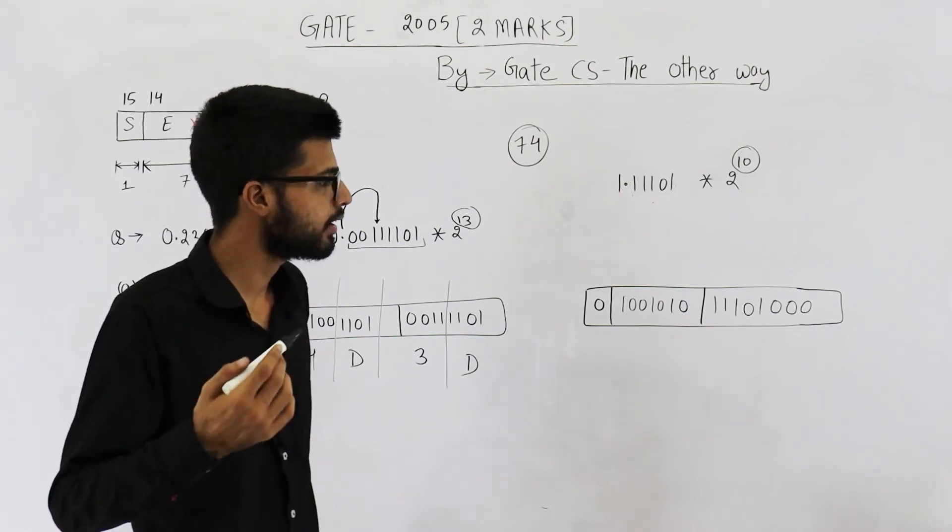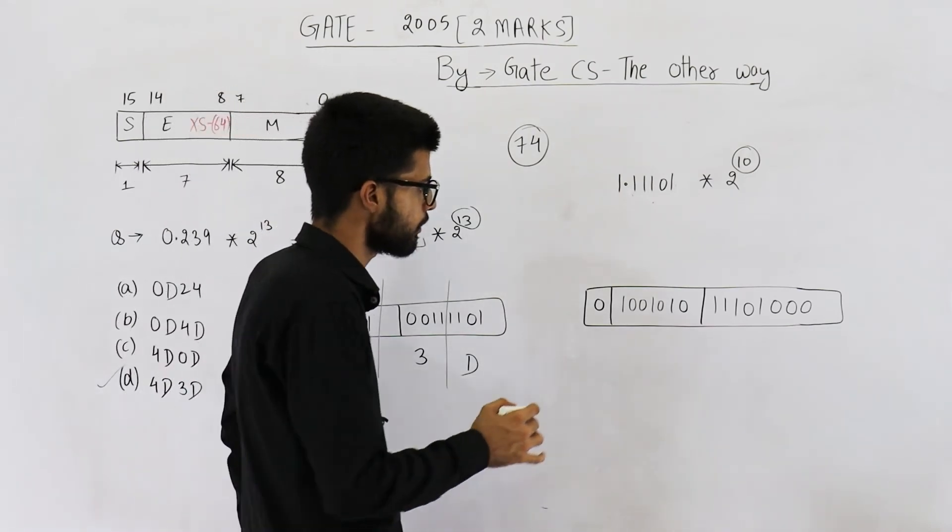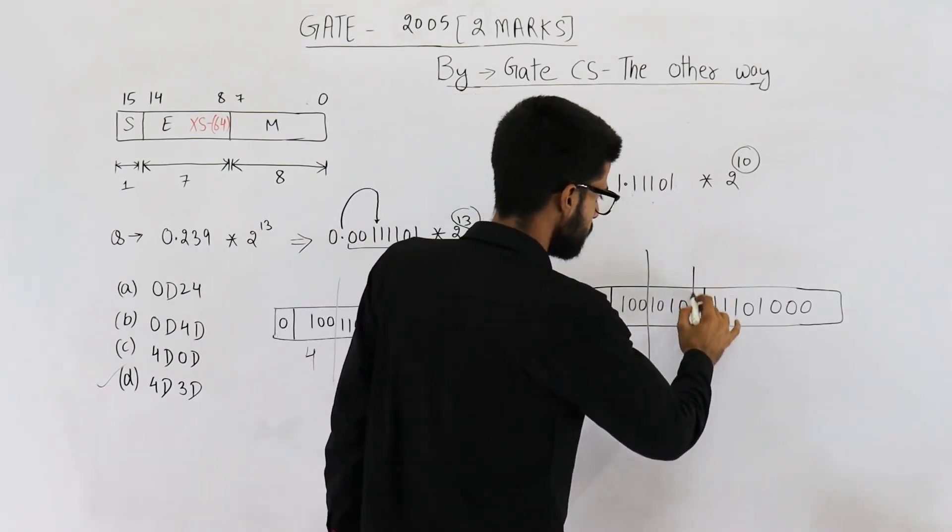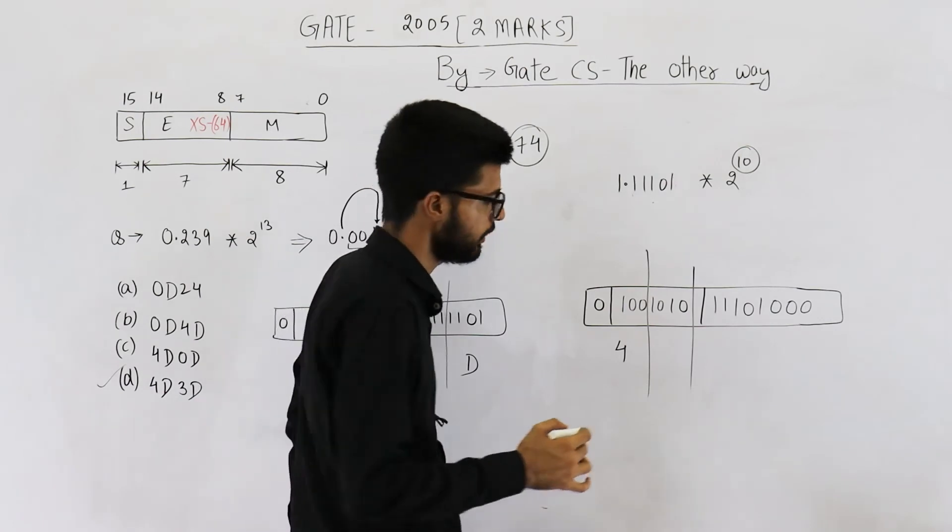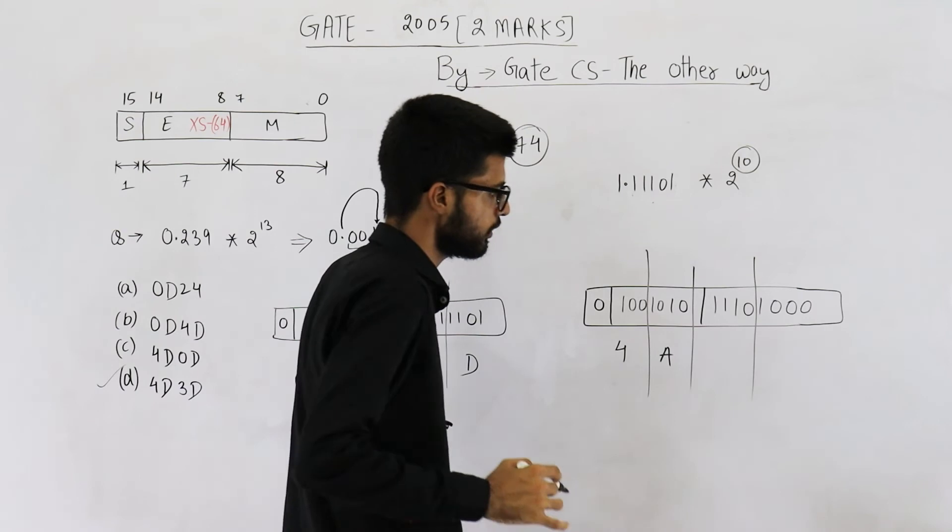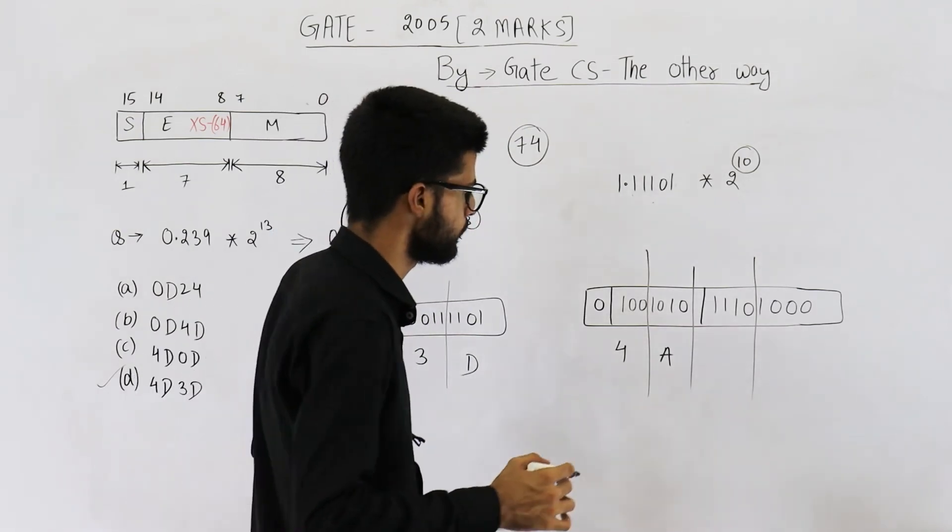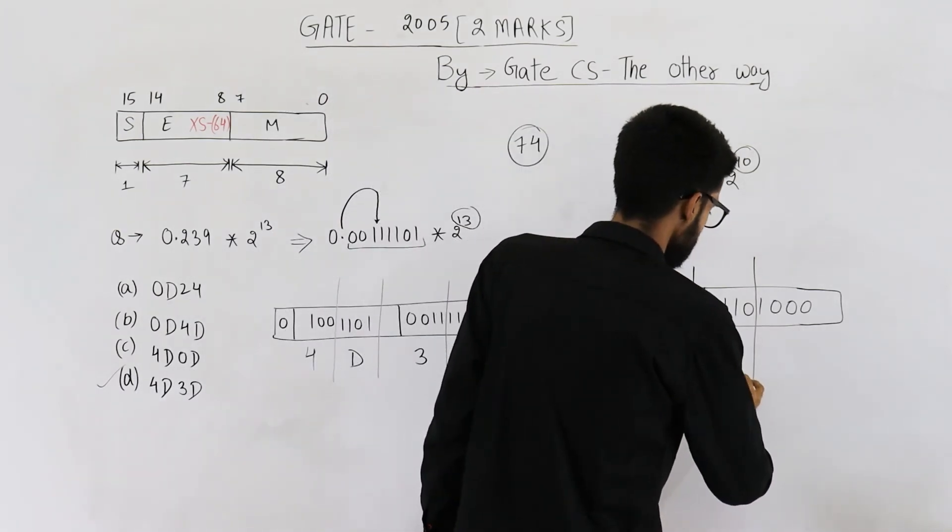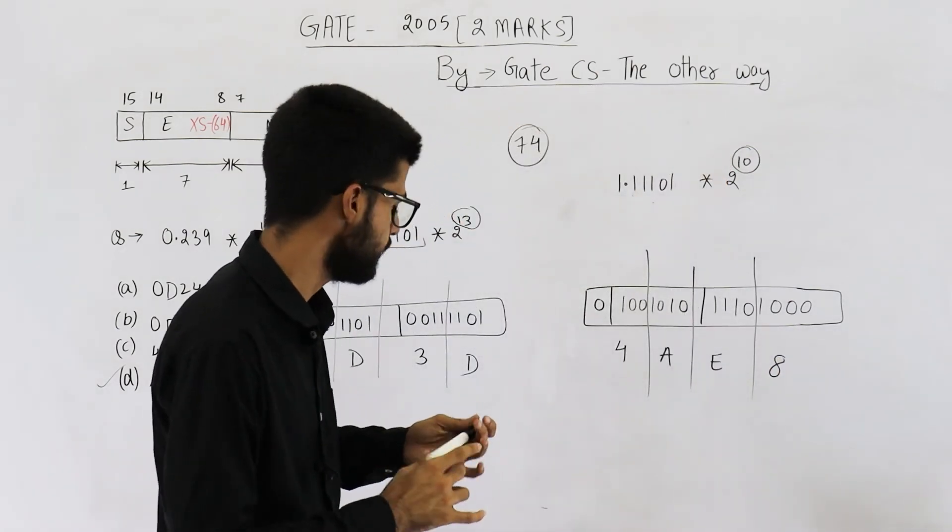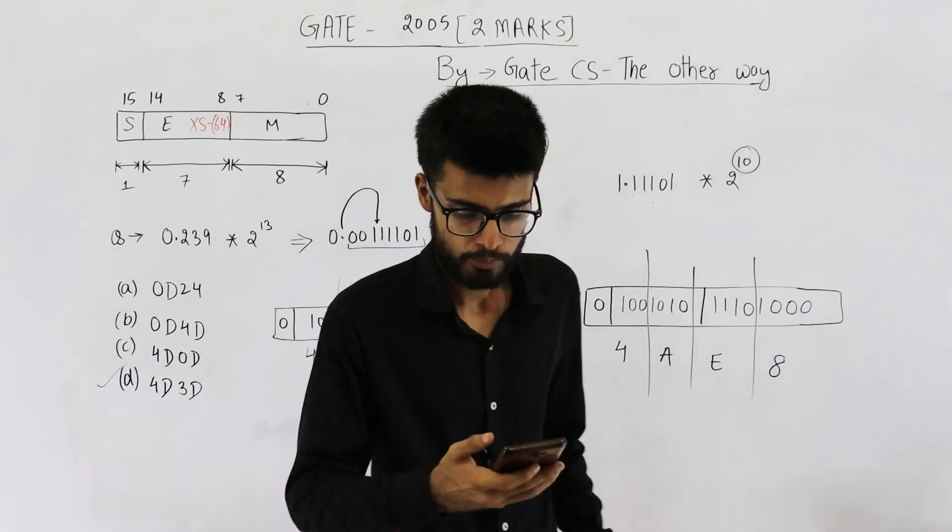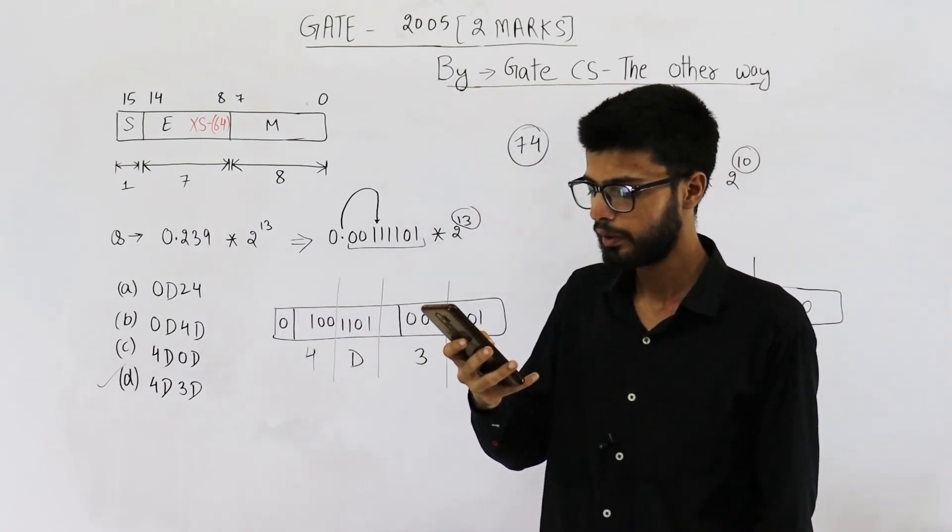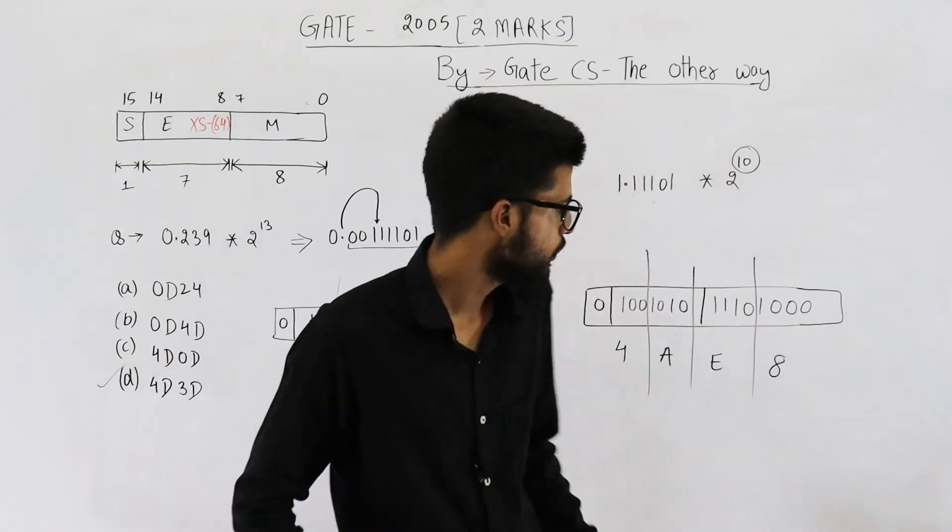Now just convert it into hexadecimal. So the first 4 bits represent 4. Then you have 10. 10 means A. It is 4A. Then you have 14. 14 is E. 4A E8. The answer is 4AE8. Let us see if it's present in the options. Yeah, option D is 4AE8. Answer to second question is this. Answer to first question is this.